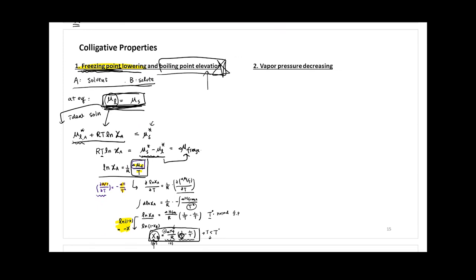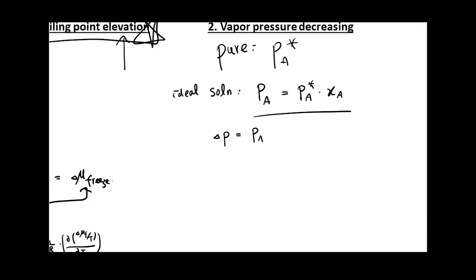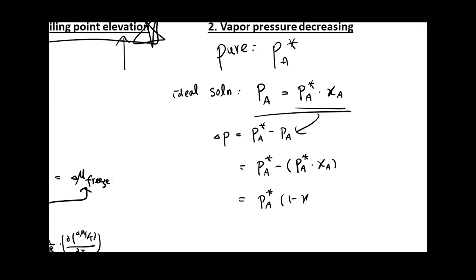Now for vapor pressure decreasing. If today you have a pure substance, your vapor pressure is Pa*. If you have a solution, the vapor pressure of component A — assuming an ideal solution — is Pa = Pa* times xA. The difference between the two is Pa* minus Pa, which equals Pa* minus Pa* times xA, giving Pa*(1 − xA). Since 1 − xA equals xB, this equals Pa* times xB.